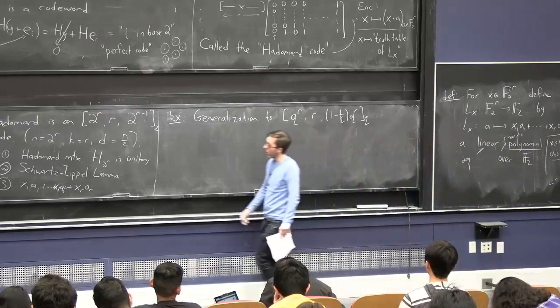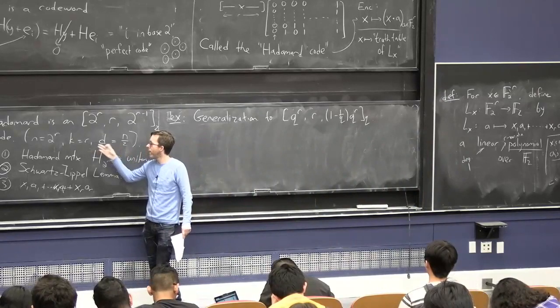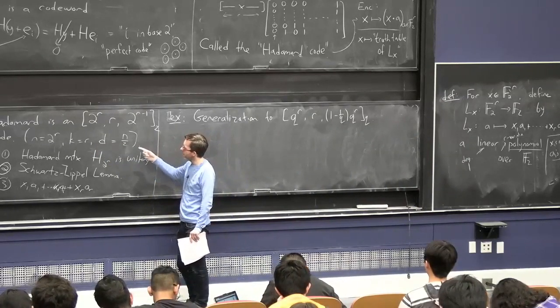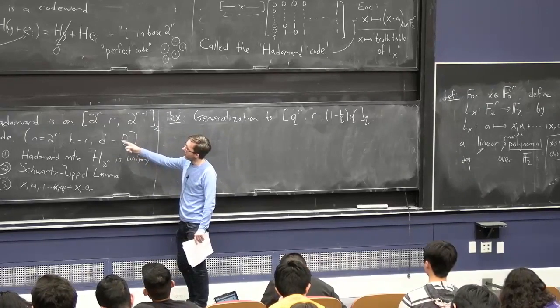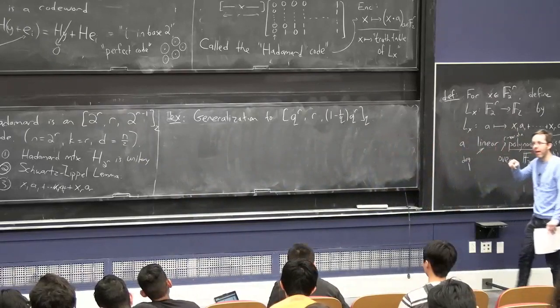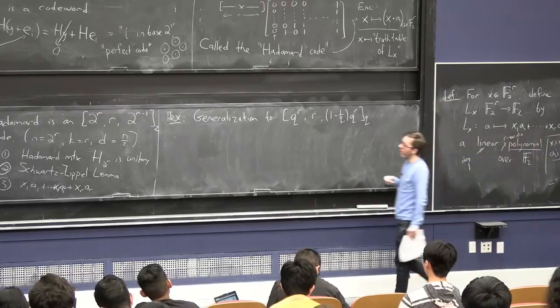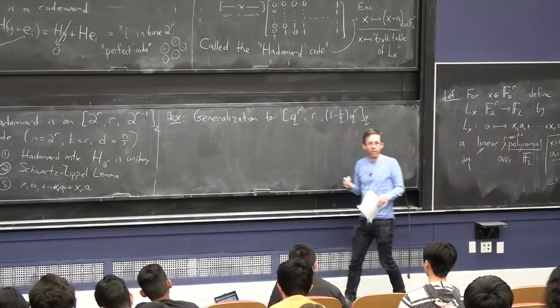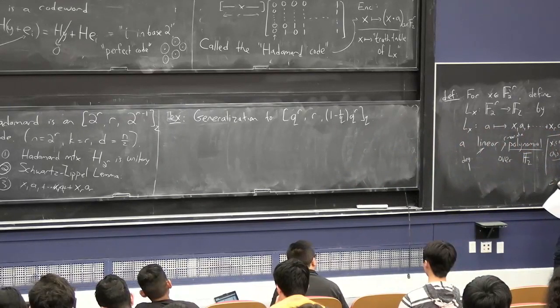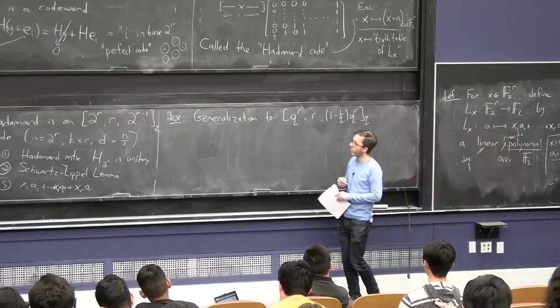The Hadamard code has amazing minimum distance but terrible rate. It's also known to be optimal in a sense that for a binary code, if your minimum distance is not just n times 1/2, but n times 1/2 plus epsilon, then the code can only contain constantly many codewords, where the constant depends on epsilon. That's really the ultimate terrible rate, to only have constantly many codewords in your growing block length space.